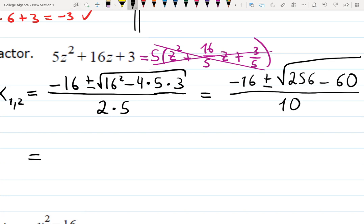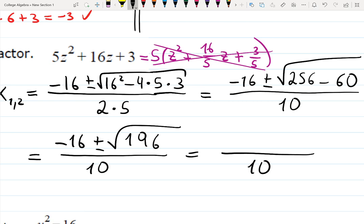Okay. Then, I will have 10, minus 16, plus or minus, 256 minus 60 is 196, and that looks like a very familiar, nice number for the square root. And indeed, it's going to give me plus or minus 14, because the square root of 196 is 14.